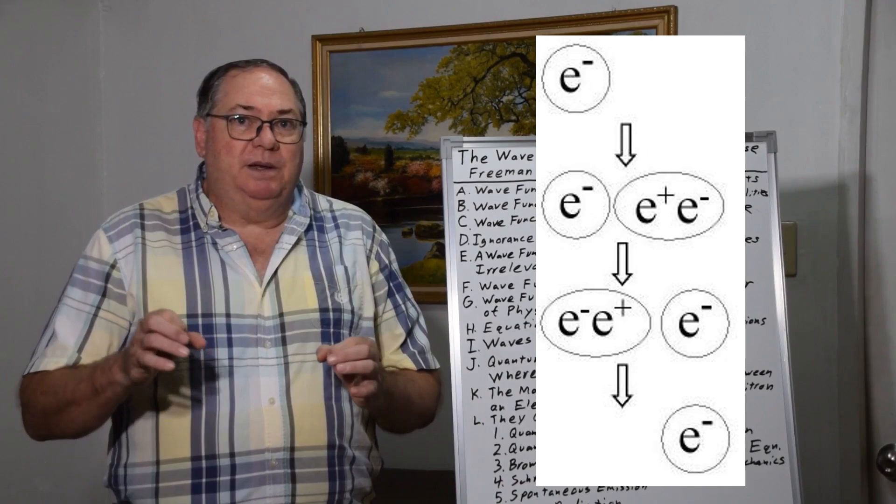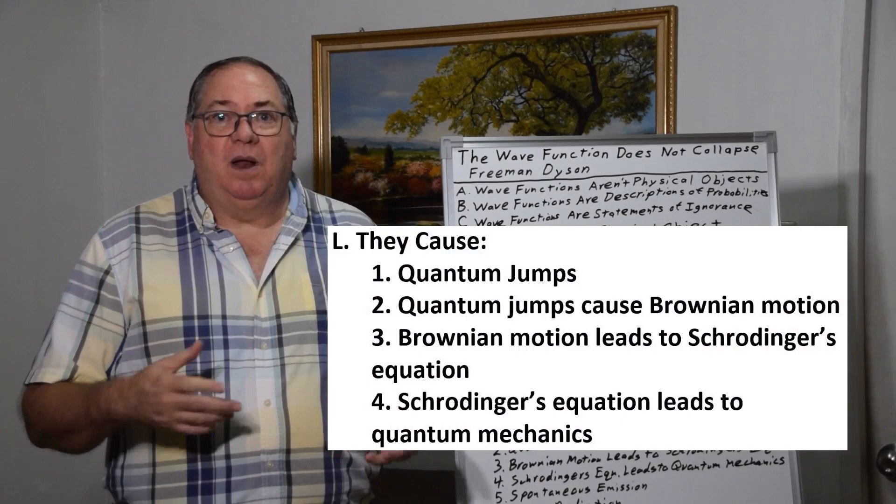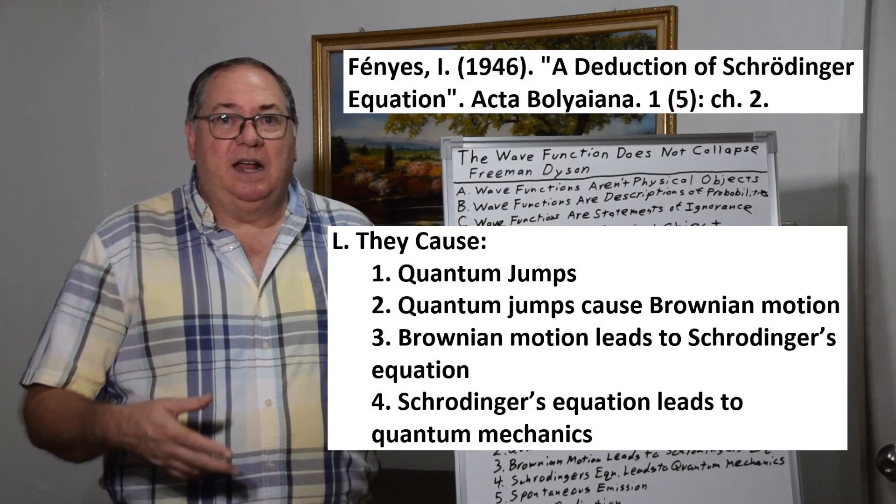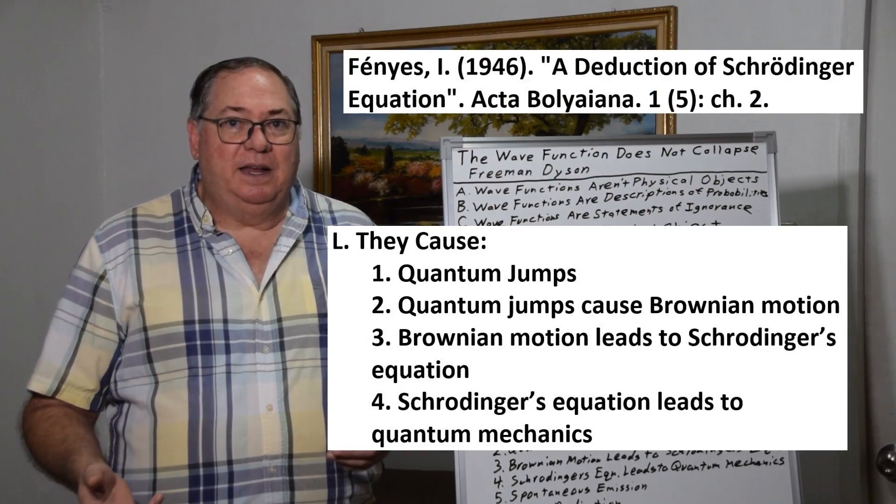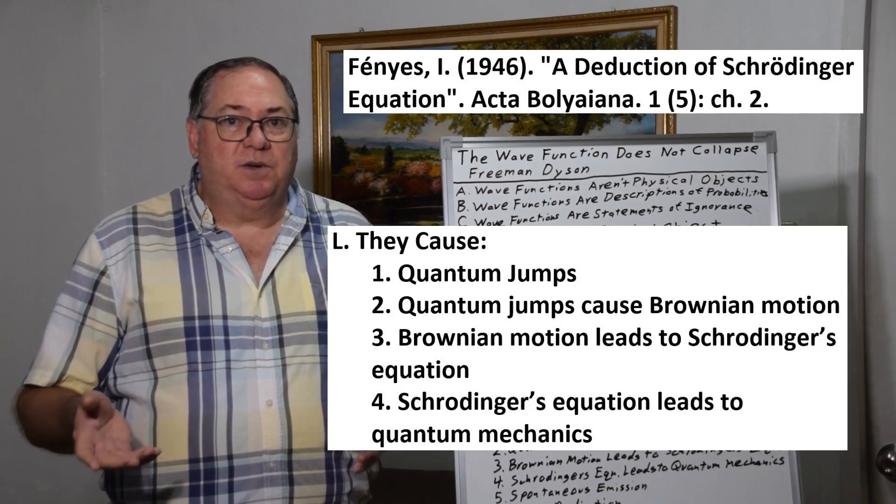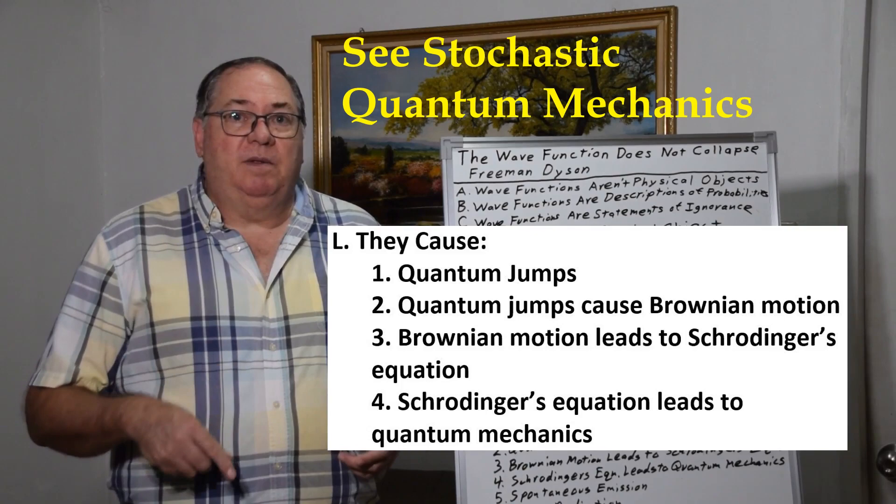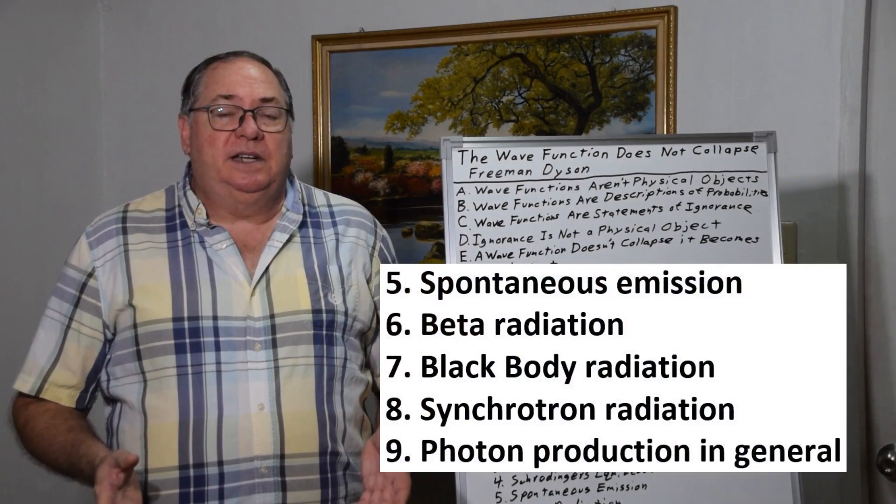This interaction causes a quantum jump. The electron appears to jump, although it's been actually replaced. When you have a series of jumps, the quantum jumps lead to Brownian motion. It's been shown that if you have electrons in Brownian motion, such as in a hydrogen atom, you can derive Schrodinger's equation from that. So we can physically describe the interaction leading to Schrodinger's equation as Brownian motion. Once you have Schrodinger's equation, you can derive all of quantum mechanics, all starting from the principle of having quantum jumps.